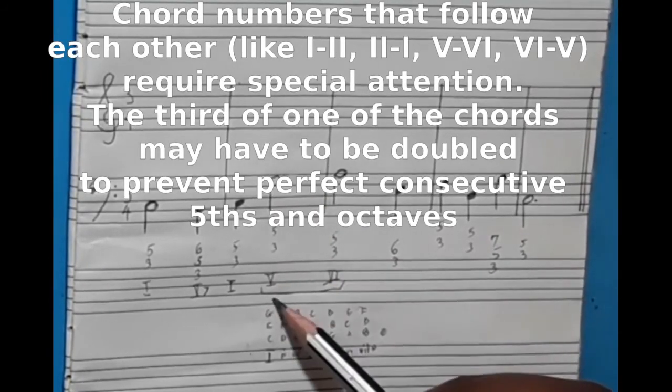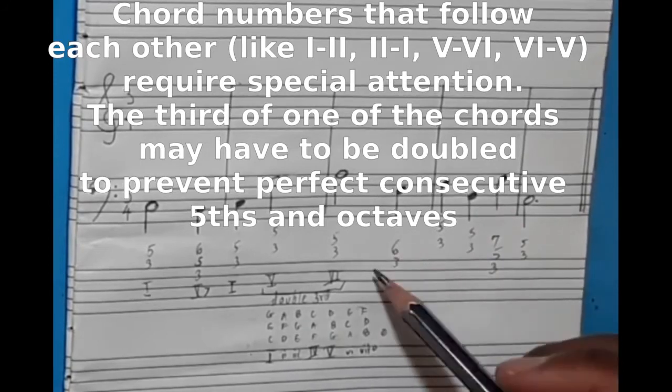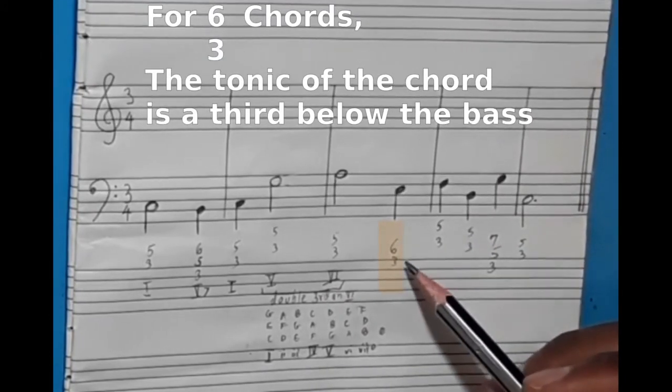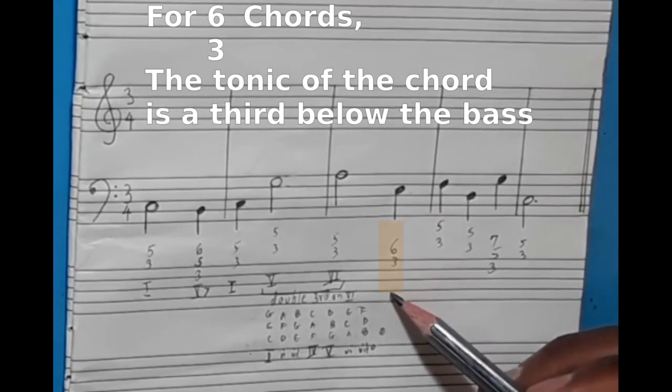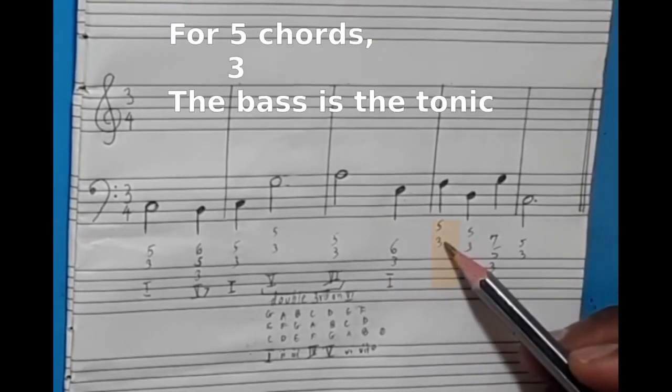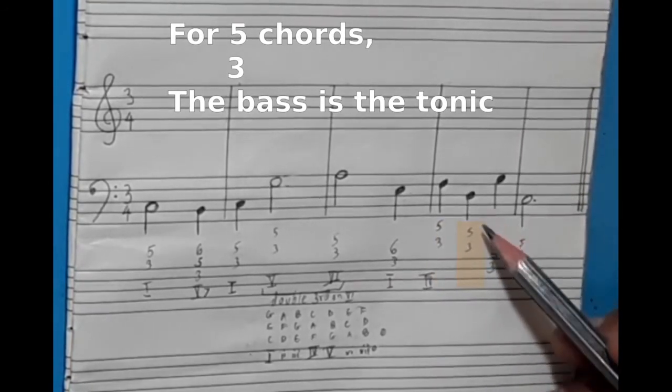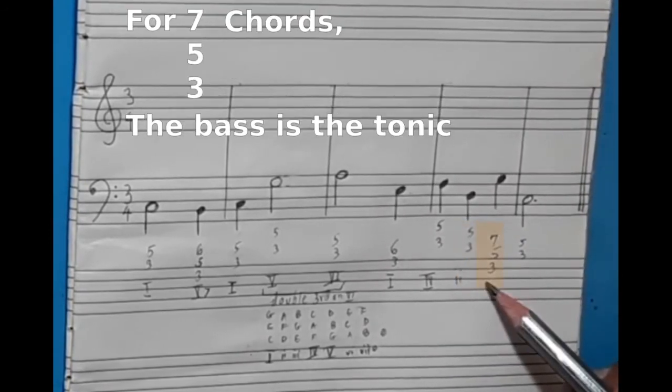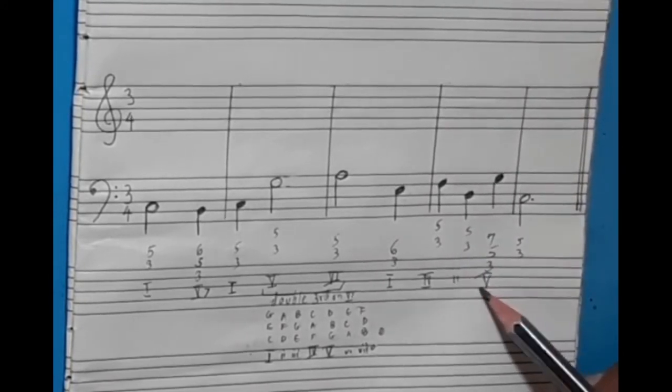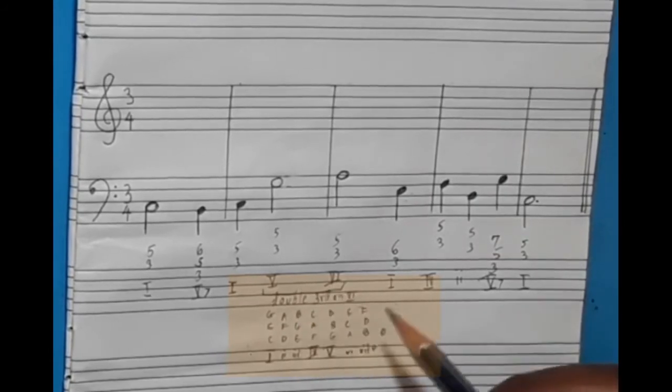Chord five to chord six will require special attention. The third will be doubled in one of the chords to avoid consecutive perfect fifth or octave. Six-three is a first inversion. The tonic is a third below the bass. This is C major. Root position chord four. Root position chord two. Seven-five-three is a seventh chord in root position, chord five seventh. How do I know these chords? The table of triads that I created earlier has all this information.